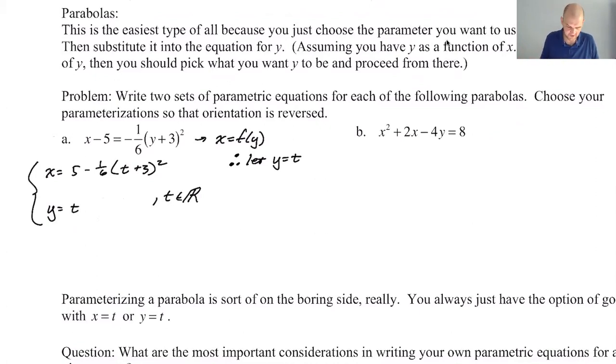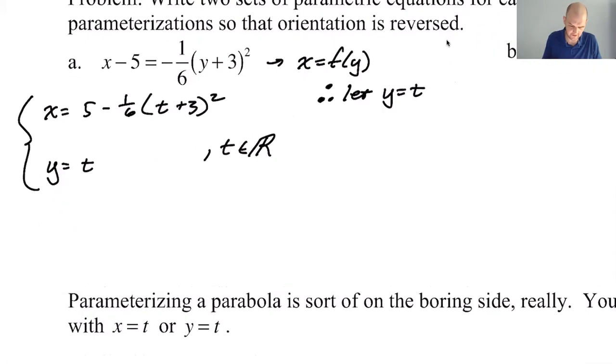The problem says that we're supposed to actually write two sets of parametric equations, and we want to choose our parameterization so the orientation is reversed. Think about what's happening right now. So for this particular problem, because y is equal to t, we know that if t increases, y increases, which means in general, we're going to be moving up. So you start low, and then as t increases, y increases.